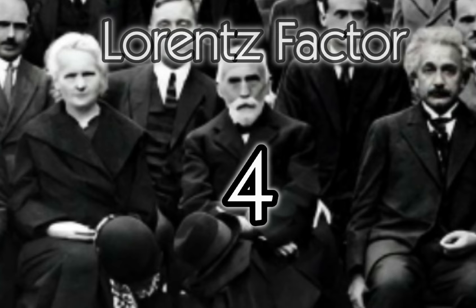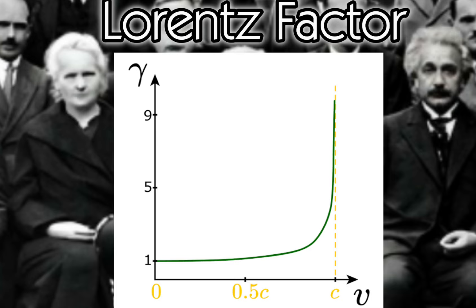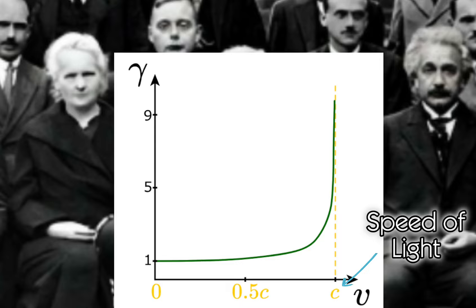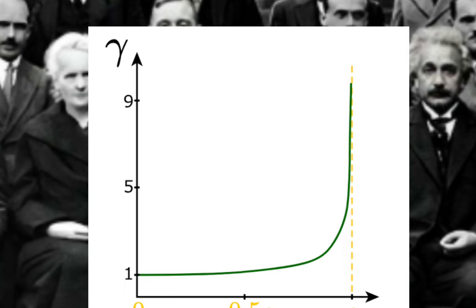Four, Lorentz factor. Derived from his transformations, the Lorentz factor, often denoted as gamma, is a crucial element of special relativity. It represents the relativistic effects on time, length, and mass as an object approaches the speed of light. The Lorentz factor is an essential concept in understanding the behavior of particles at high velocities.